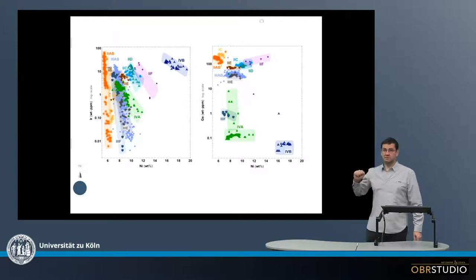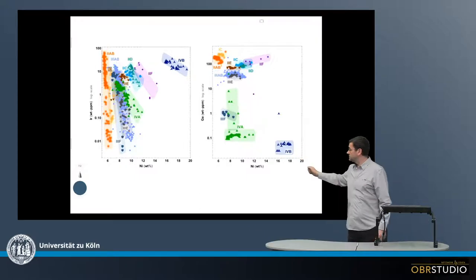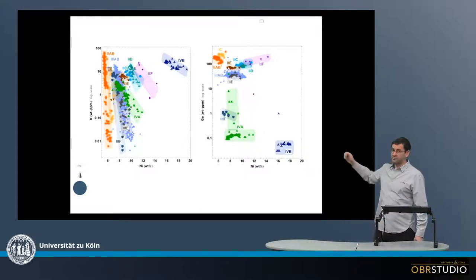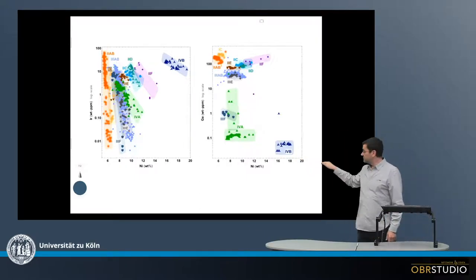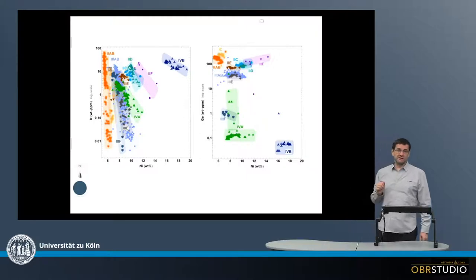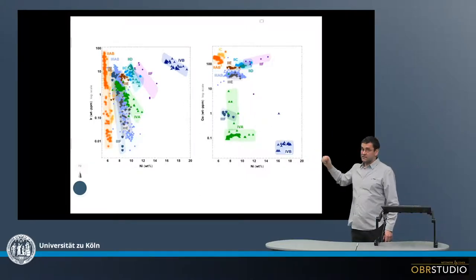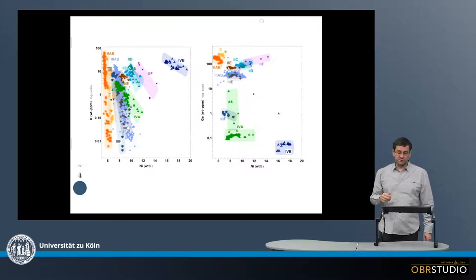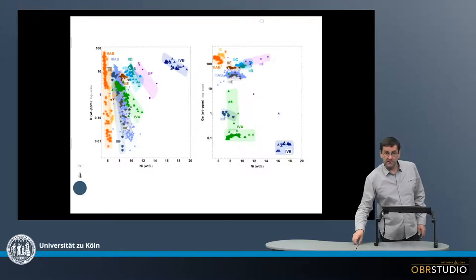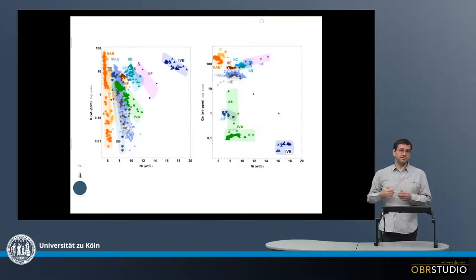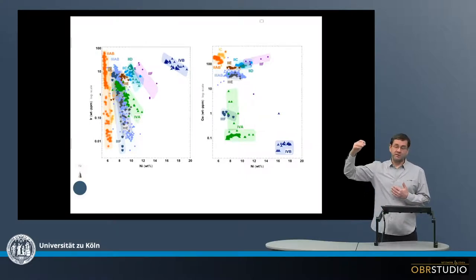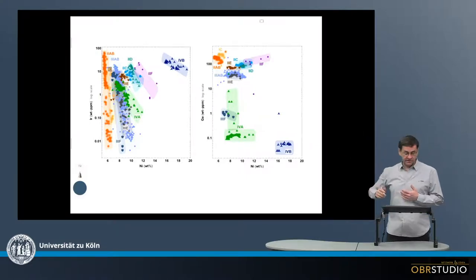Two of the typical plots are shown here. On the y-axis there is iridium in the one diagram and germanium in the other diagram. In both diagrams there is nickel on the x-axis. The y-axis has a log scale, which means that these compositions scatter across a very wide range, as you can see here.